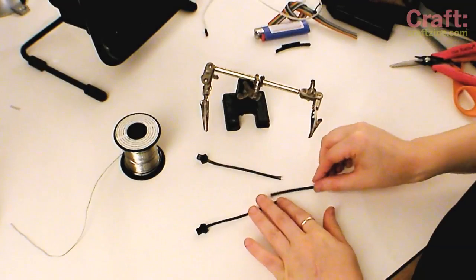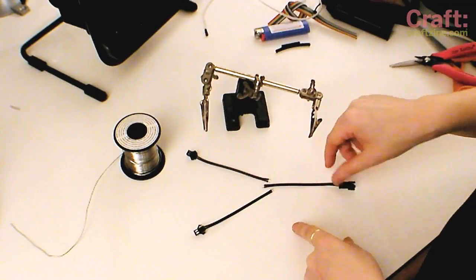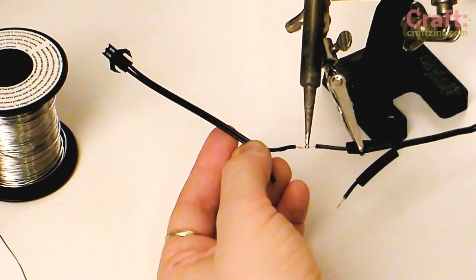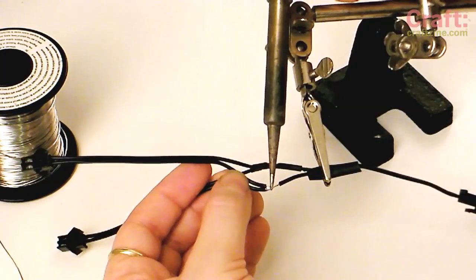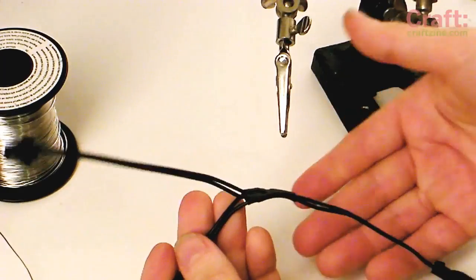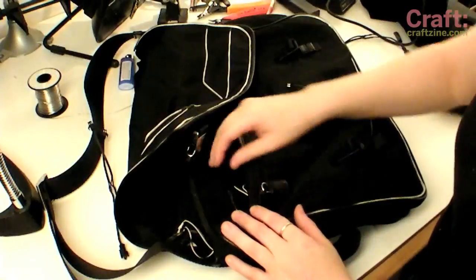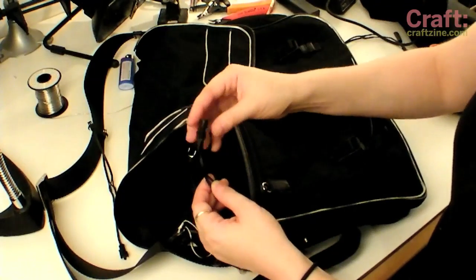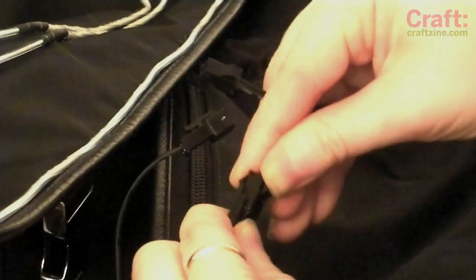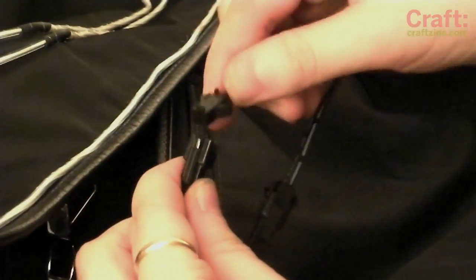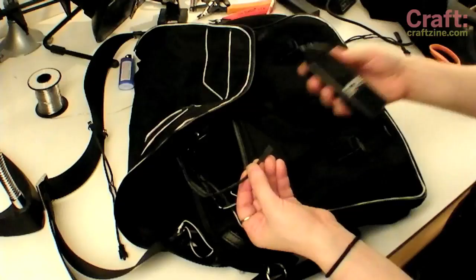Okay, now we're going to make a Y connector. This will allow us to power two strips of EL easily using one inverter. You can also do this without connectors but just by soldering wires together, but this is slightly more elegant and easier to work with. We've finished sewing up all the EL and we've pulled the connectors out here. Now we're going to use our Y connector that we made to join the strands together. And then we'll be able to connect this to a single inverter.